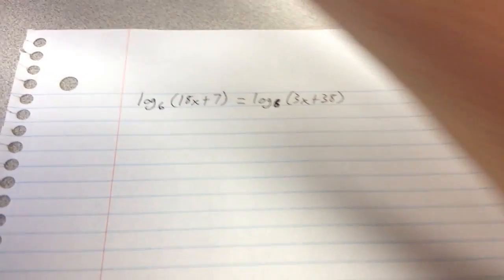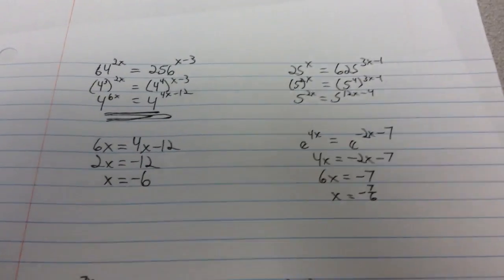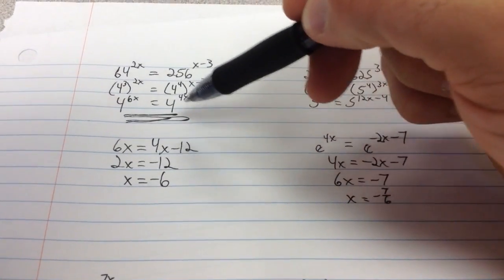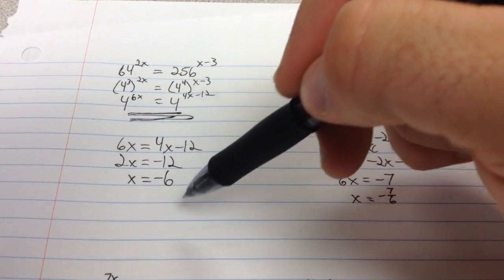When you had the same base on both sides for an exponential equation, what you ended up doing is you ended up just dropping the base off, and you ended up with the exponents equal, and you solved it.